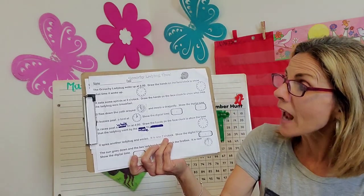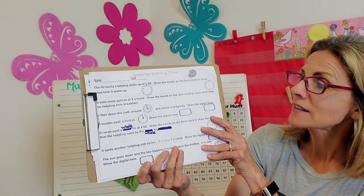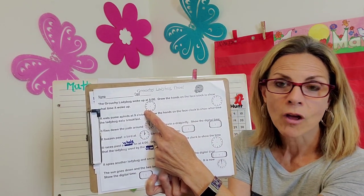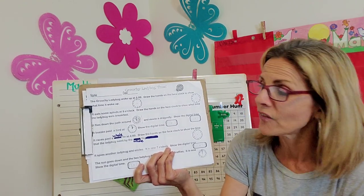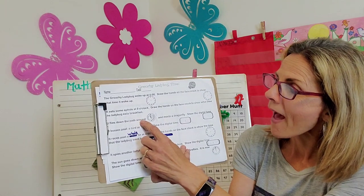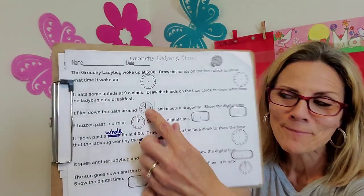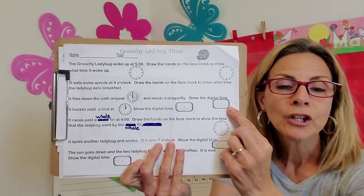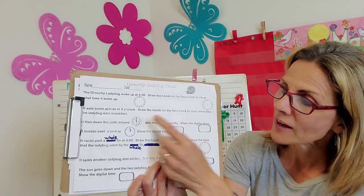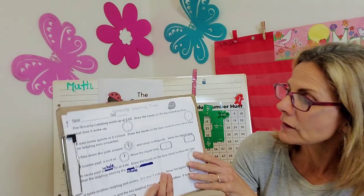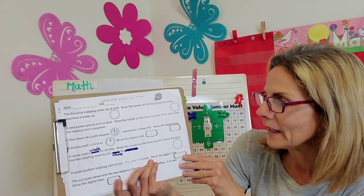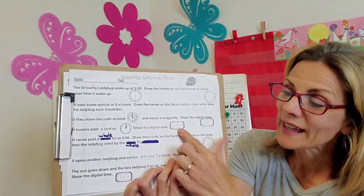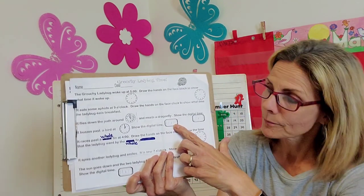It eats some aphids at nine o'clock. Draw the hands on the face clock to show the time that the ladybug eats breakfast. So, you'll just draw nine o'clock. It flies down the path around that time. You're going to read it and it meets a dragonfly. Show the digital time. So, on that one, you're going to write in the digital time to match this clock or you can just draw your little digital clock, which will be very easy. It buzzes past a bird at this time. That's the analog time. So, again, you're going to make a digital match to this time.